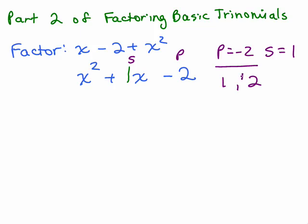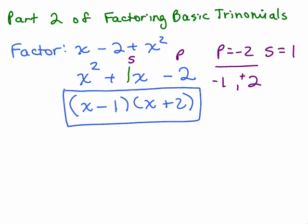Since the sum is positive 1, we put a positive in front of the larger number and since the product is negative, the other number has to be negative. This gives us x minus 1 and x plus 2, and we're done.